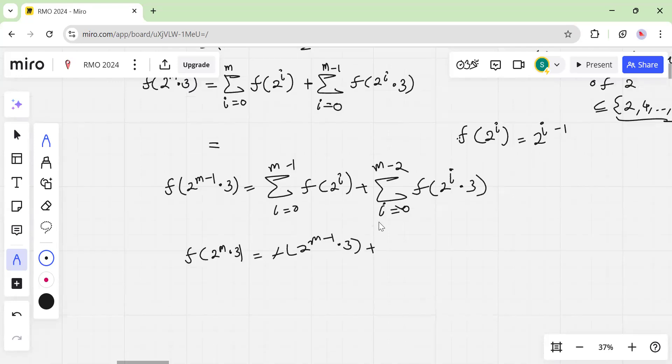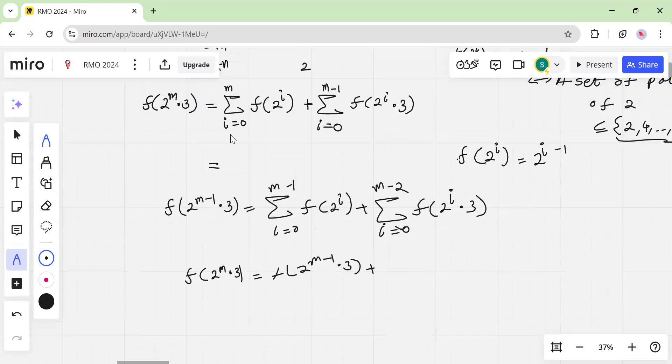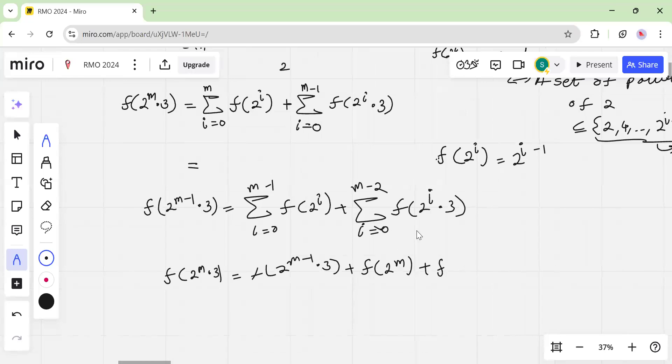So the key idea is that you can write f of 2 to the m times 3 plus those extra elements in the sum, which is like in this case, you have the extra f of 2 to the m plus over here, you have f of 2 to the i. So here i is equal to m minus 1 is the case which is missing over here. And this is f of 2 to the m minus 1 times 3.